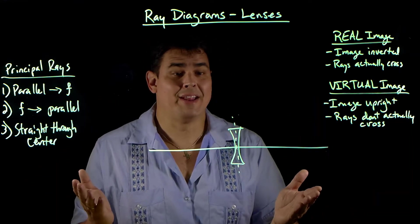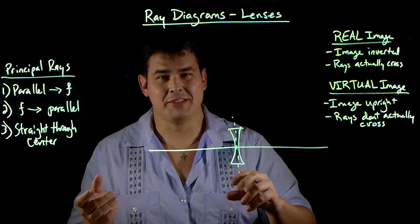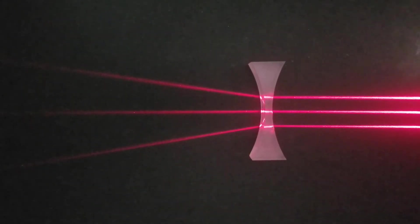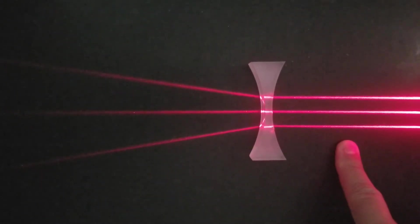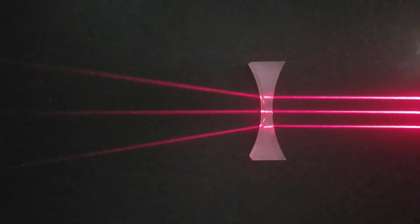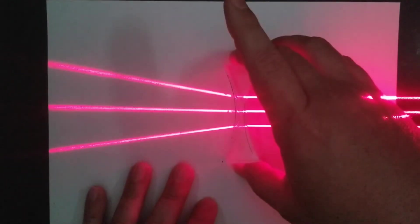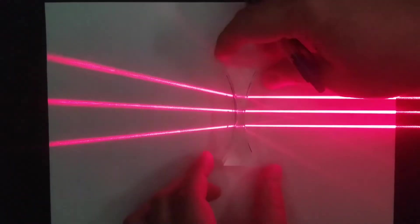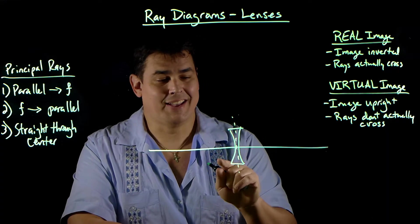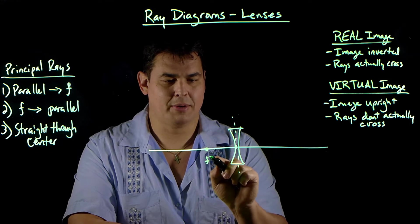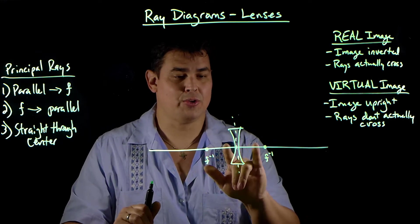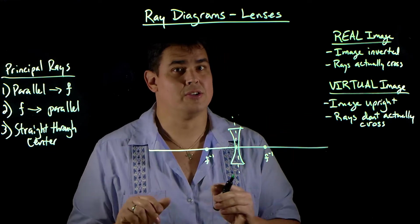What about a diverging lens? Diverging lenses still have a focal point, but it behaves differently. Parallel rays come in, but instead of focusing at a focal point, they diverge away from an antifocal point — an imaginary focal point that all these rays are going away from. I'm going to draw the antifocal points on the diagram, marking them to show they're antifocal points, and try to place them exactly the same distance on each side.